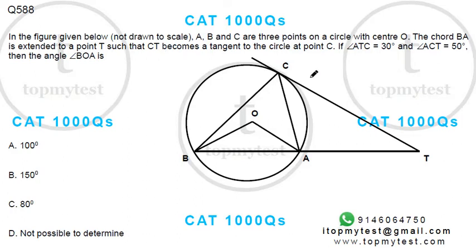The figure below not drawn to scale: ABC are three points on the circle with center O. Chord BA is extended to point T such that CT becomes a tangent. ATC is 30 degrees, ACT is 50 degrees. What is angle BOA?